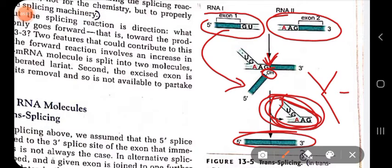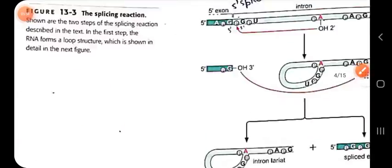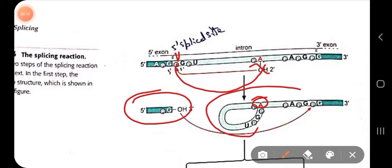In trans-splicing we see a Y-shaped structure of introns because the initial reaction brings together two RNA molecules rather than forming a loop within a single molecule. In the standard reaction, during the first transesterification, the five prime end of the intron folds onto itself and base pairs with the branch site adenine to form a lariat ring-like structure.